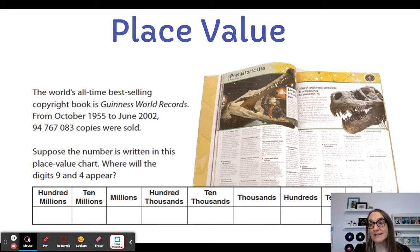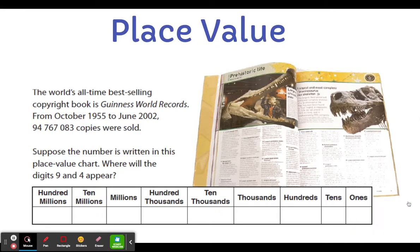Imagine that we write this number 94,767,083 in this place value chart, and I'm going to just x my camera off so we can see the whole chart. Where in that chart would the digits nine and four appear? Take a second, think about where they would appear. And then we'll talk about it together.